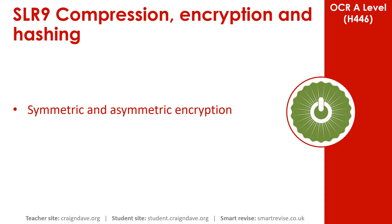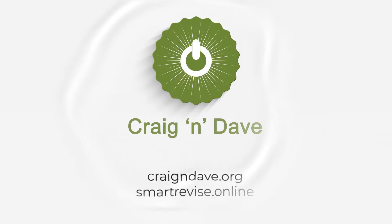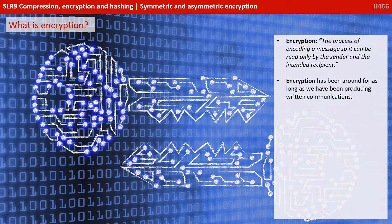In this video we talk about symmetric and asymmetric encryption. Encryption is the process of encoding a message so it can be read only by the sender and the intended recipient. Encryption has been around for as long as we've been producing written communications.